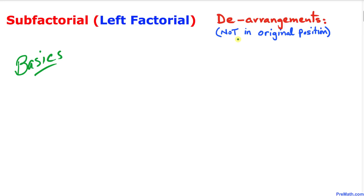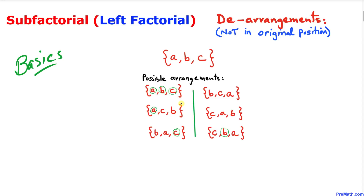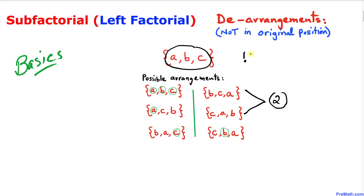Derangements means objects are not in their original position. Here we have a set containing three objects — a, b, and c — and we want to find the possible arrangements. There are six possible arrangements of these three objects. Two of those arrangements are ones where a, b, and c are not in their original position, so the sub factorial of three equals two.